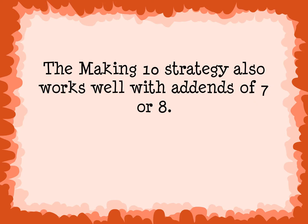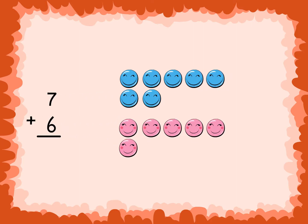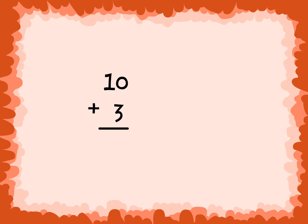The making 10 strategy also works well with addends of 7 or 8. Take, for example, 7 plus 6. If we make 7 into 10, you have to take 3 away from 6. So 7 changes to 10 and 6 changes to 3. 10 plus 3 is equal to 13. So 7 plus 6 must equal 13.